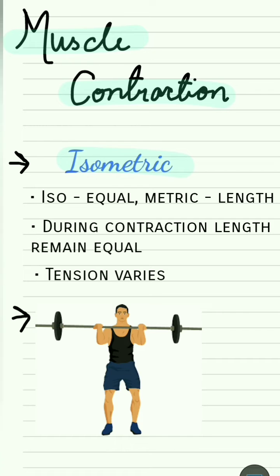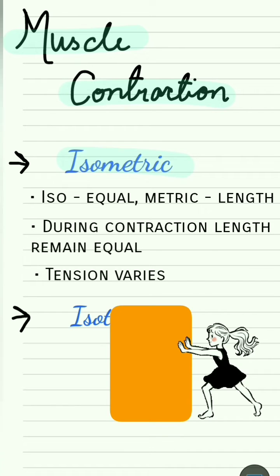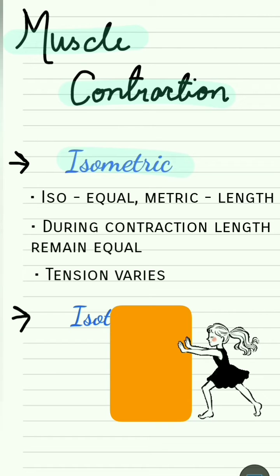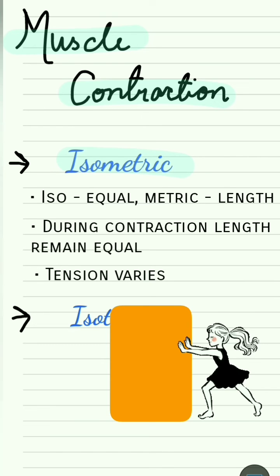Another example is pushing a wall. Tension is required to attempt to push the wall, but since the wall will not move, there is no change in the length of the muscle.